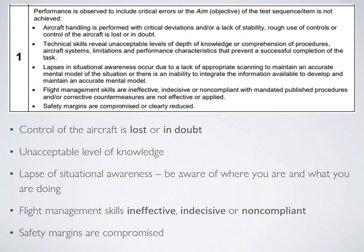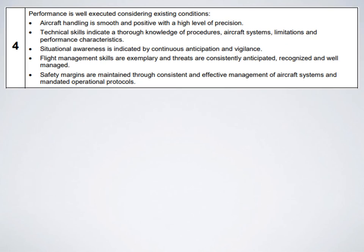The failure of any singular flight test exercise constitutes a failure of the entire flight test. However, the failure of one or two air items requires only a partial retest on those items, whereas failure of a third or more air items will require a complete retest. If you do receive a one, it's not the end of the world — it just means you require more training on that item until you have sufficient skill to be granted the private pilot license.